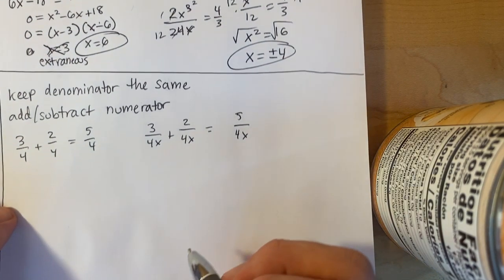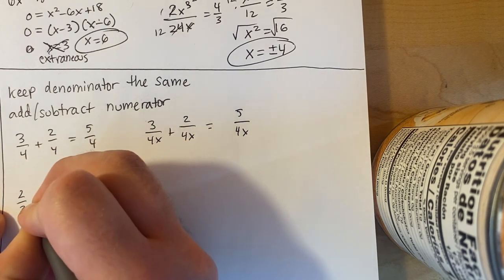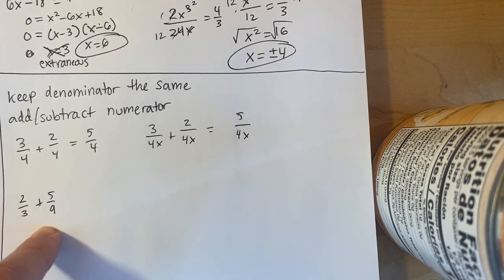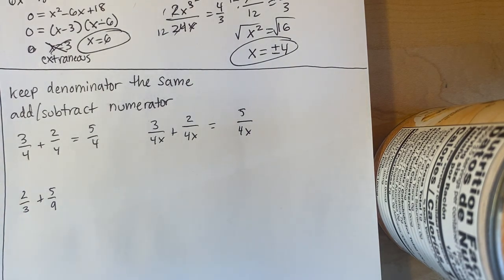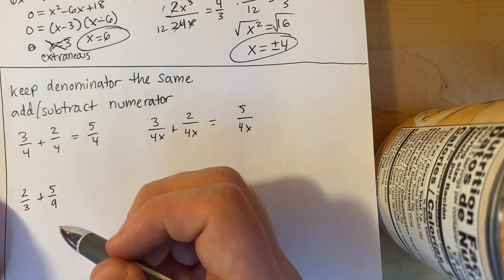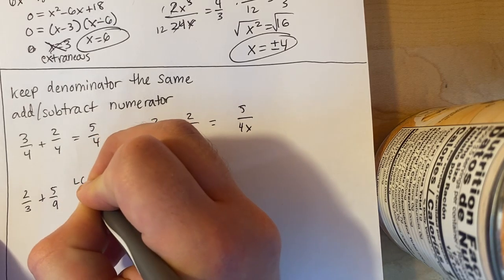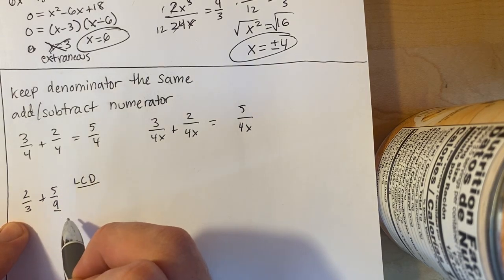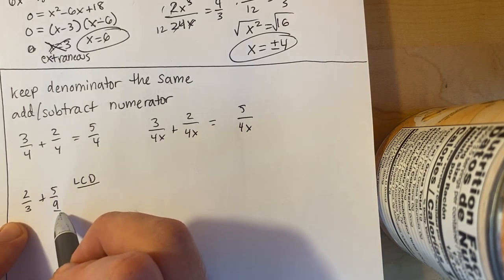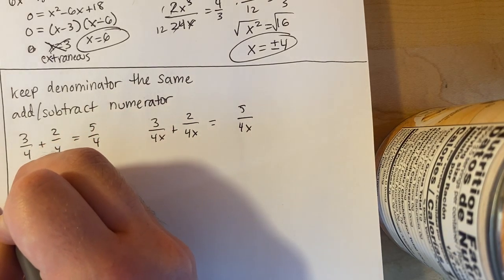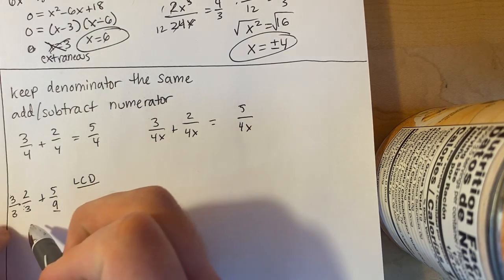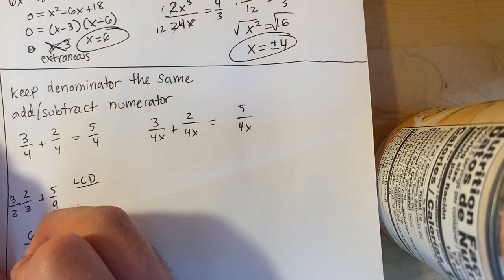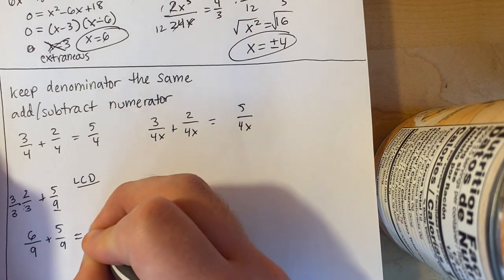Now we have two thirds plus five ninths. The problem is the denominators aren't the same, so we need to find the least common denominator. The LCD is 9, because 3 goes into 9. So I multiply the first fraction by three over three to get six over nine, plus five over nine, which equals eleven ninths. The same applies for variables: two over three x plus five over nine x. The LCD is nine x, so I multiply the first term by three over three to get six over nine x plus five over nine x, which equals eleven over nine x.